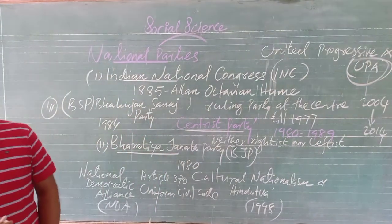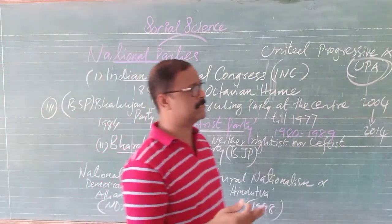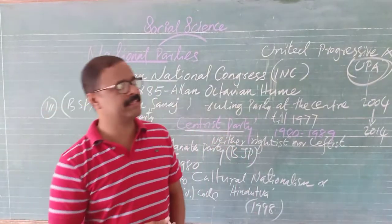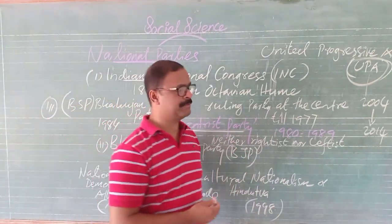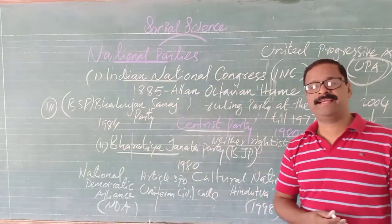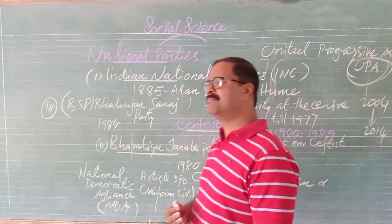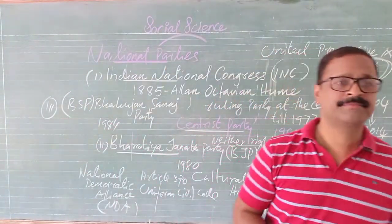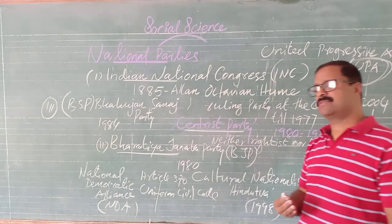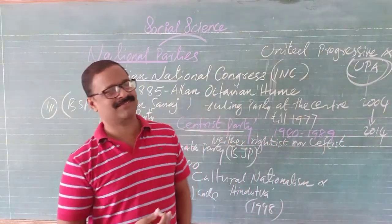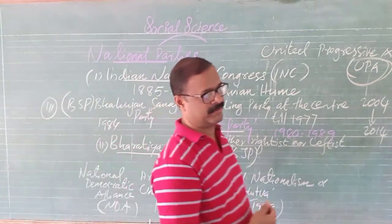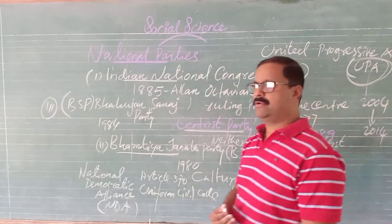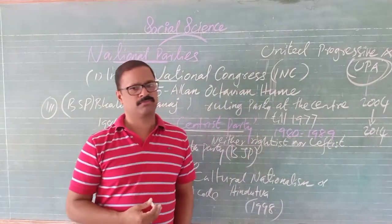The BSP has a substantial presence in Uttar Pradesh and neighboring states like Madhya Pradesh, Chhattisgarh, Delhi, and Punjab. Several times this party formed the government in Uttar Pradesh under the leadership of Mayawati. Due to anti-incumbency, the party has recently lost power but retains significant presence in Uttar Pradesh. The remaining parties will be discussed tomorrow.